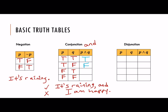What about if P is false and Q is true — it's not raining, but you are happy — and you say 'it's raining and I am happy'? AND means both of those things must be true, and they're not both true, so that's a false statement. And finally, if it's not raining and you're not happy, but you say both of those things are true, that's definitely a lie — so that would be false as well. The only time an AND statement is true is if both pieces of it are true. For example, 'I went to the store and I bought oranges' is only true if you actually did both.